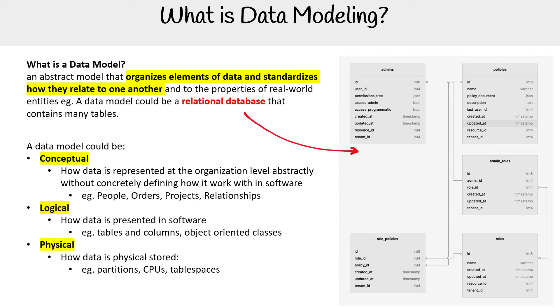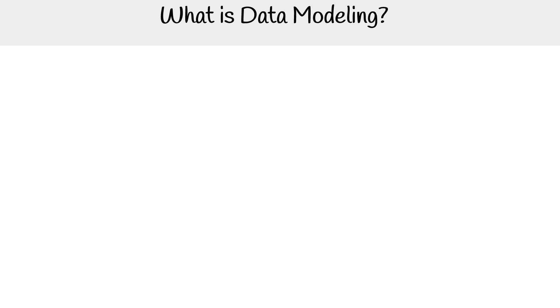So this one shown would probably be the middle one, which is logical. This isn't exactly how all data modeling looks — there are all varieties of ways a data model can appear.